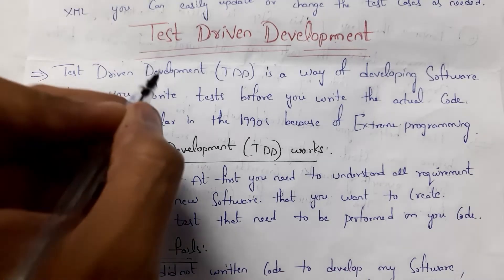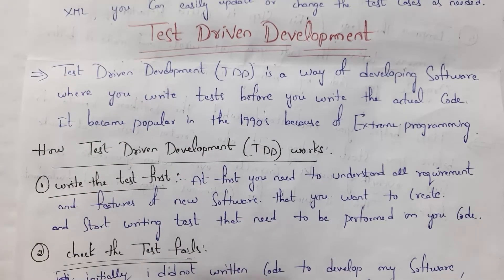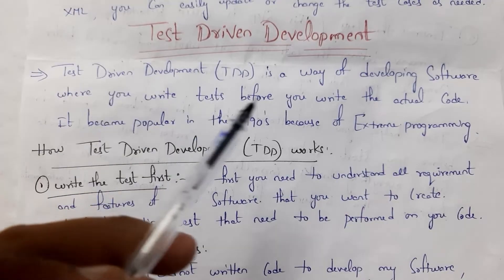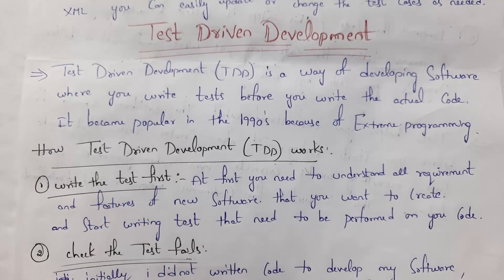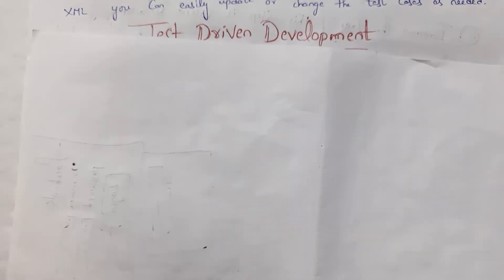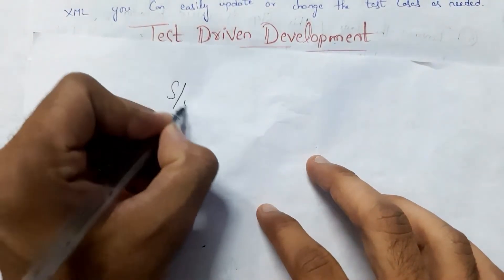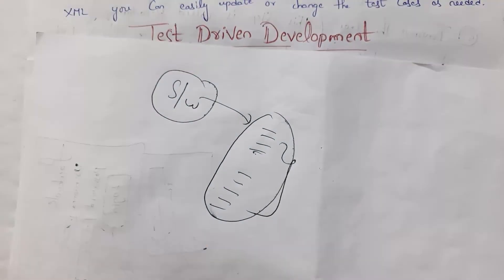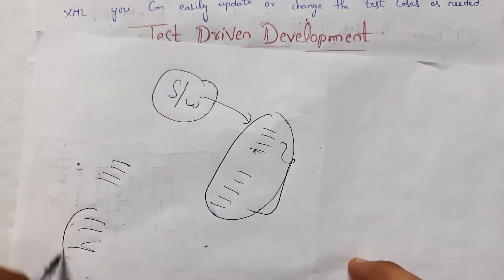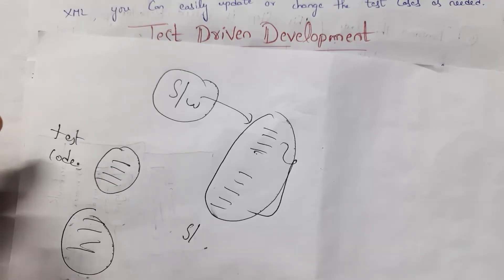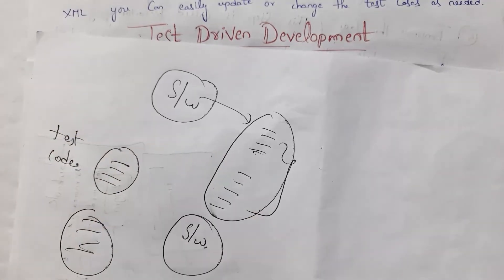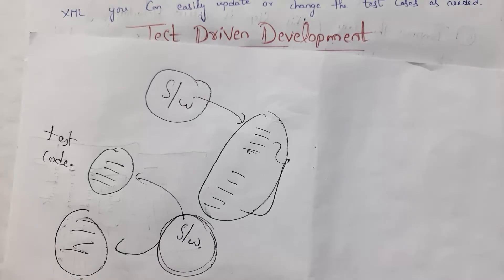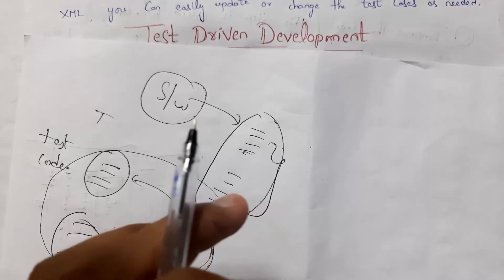Next, I will explain what is test-driven development — shortly called TDD. Test-driven development is a way of developing software where you write tests before you write the actual code. It became popular in the 1990s because of extreme programming. In a normal approach you develop the software first and then write testing code, but TDD is completely opposite — you first develop test code to perform testing on the software, and only after completing test scripts do you start developing your software.